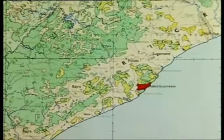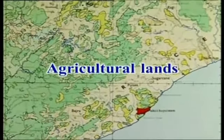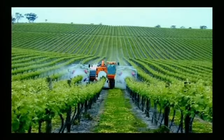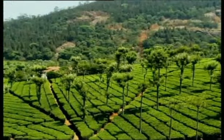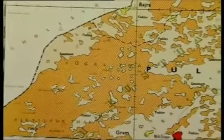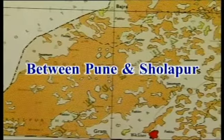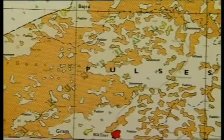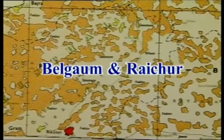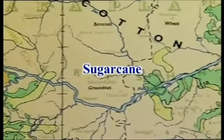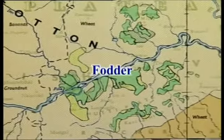Looking at the prevailing land use patterns of this region, we can see the distribution of agricultural lands, forests, non-agricultural lands, grazing lands, and unproductive lands. Agricultural land includes irrigated croplands, unirrigated croplands, and plantation areas. The irrigated croplands are distributed in the northern parts around Nanded and Kopergaon, in the central part between Pune and Sholapur, and in the southern part around Belgaum and Raichur. The major crops grown in the irrigated zones are bananas, sugarcane, wheat, rice, fodder, and pulses.